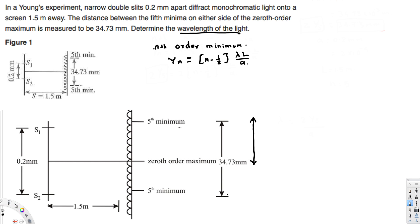The distance, that is yn. Now here we have fifth order minimum, so this total distance is y5 times 2, right? y5 should be from center, the zeroth order to this one.